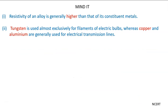The resistivity of an alloy is generally higher than that of its constituent materials. Tungsten is also used for the filament of electric bulbs, whereas copper and aluminum are generally used for electrical transmission lines.